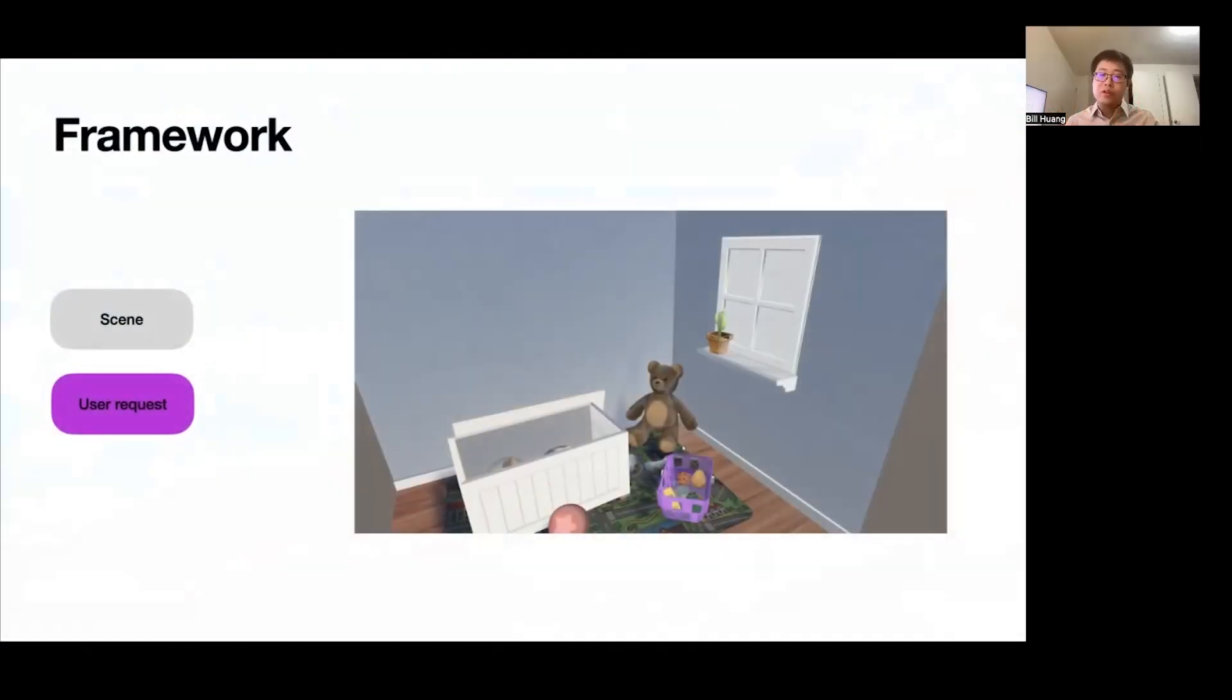Let's use this very simple example here. Here we have a virtual scene, which is a children's room, and we'll focus on this teddy bear in the middle. Let's say as a user, my request is to make the teddy bear twice as big. For the framework to do this request, it first needs to understand it in relation to the room that we have.